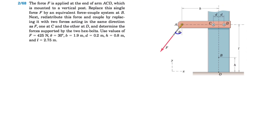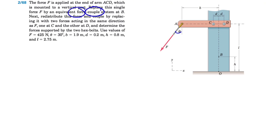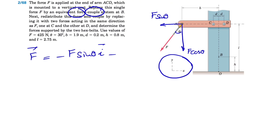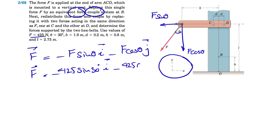First, we have to find the equivalent force-couple system. From the definition, we need a force and a couple. Expressing the force in x and y components: the x-component is F sine of theta and the y-component is F cosine of theta. In vector format, we have negative F sine theta in the i direction (since it's to the left) and negative F cosine theta in the j direction (downward). With values, F = –425 sine 30° i – 425 cosine 30° j.